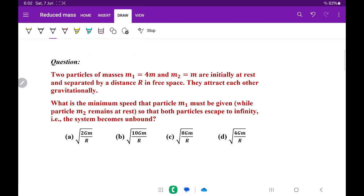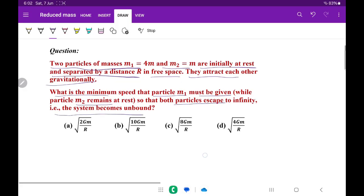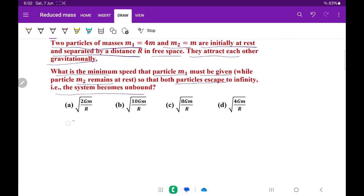The problem statement is: Two particles of masses m1 equal to 4m and m2 equal to m are initially at rest and separated by distance r in free space. They attract each other gravitationally. So this is m1, this is m2, m1 is 4 times bigger than m2, and initially they are separated by distance r.